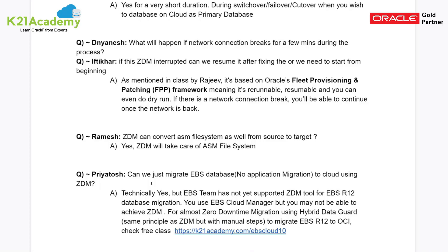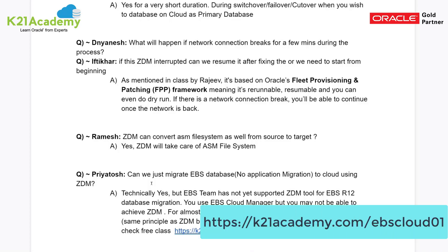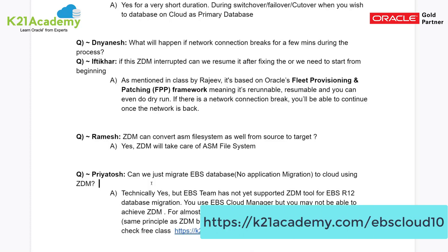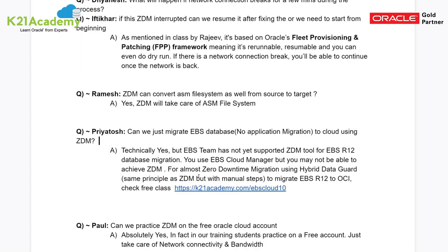If you are an E-Business Suite customer and wish to migrate, check our free guide at ktonacademy.com/cloudDBA01. In EBS Cloud Manager, as of April 2020, large databases may require a longer downtime. However, you can minimize that downtime by manually implementing what ZDM does — we call it Hybrid Data Guard. A recorded free session on migrating E-Business Suite with minimal downtime using Hybrid Data Guard is available at ktonacademy.com/EBScloud10.